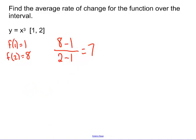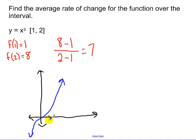So that's 7. So if I were to look at the graph of y equals x cubed, the function looks like that. What we just found is the slope of this line, the slope of that line.